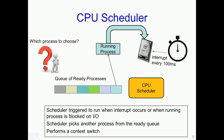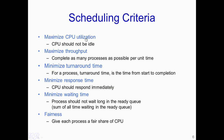Now let us come back to the question about how the CPU scheduler should choose the next process to execute from the queue of ready processes. There could be several CPU scheduling algorithms which look into the queue and make a particular decision. In order to compare these various scheduling algorithms, operating systems textbooks and research define several scheduling criteria. These criteria can be used to compare various scheduling algorithms and see the advantages and disadvantages of each of them.